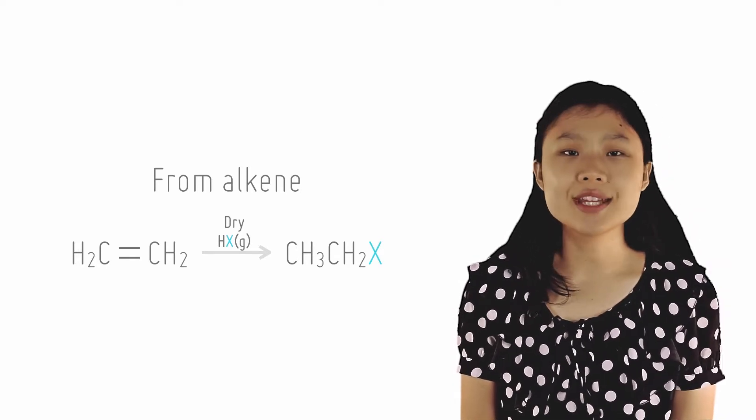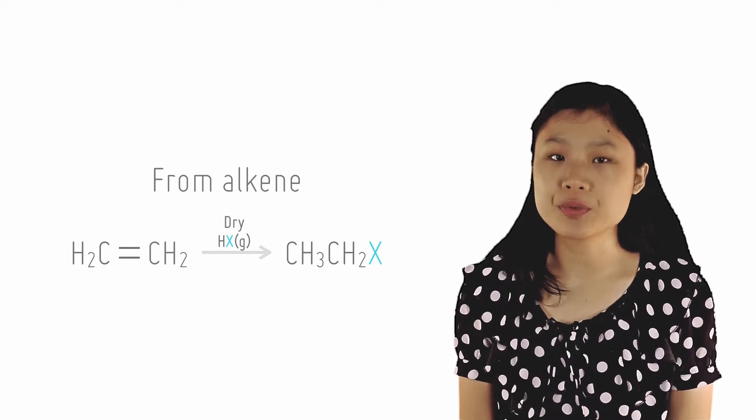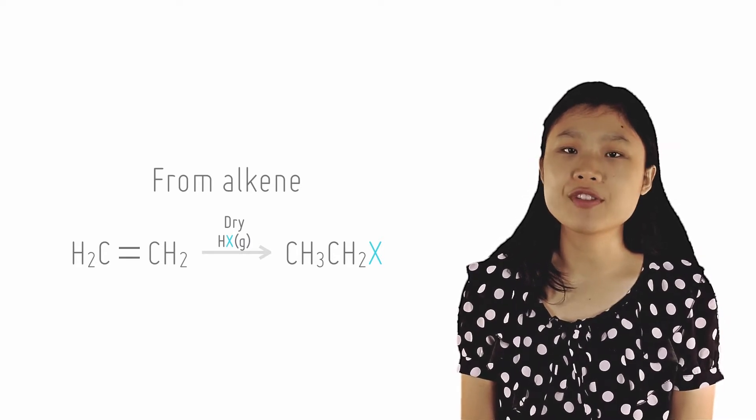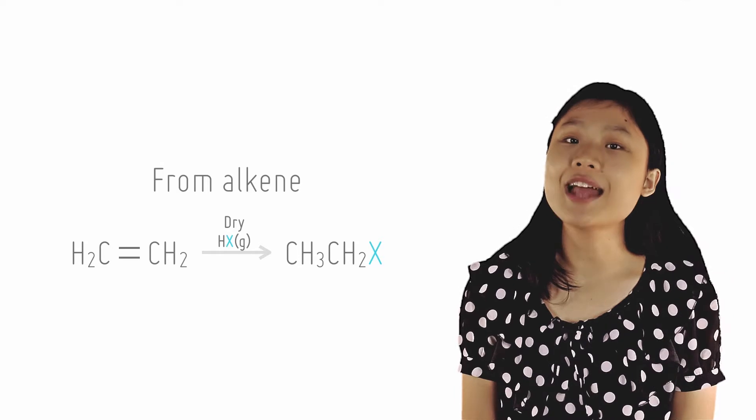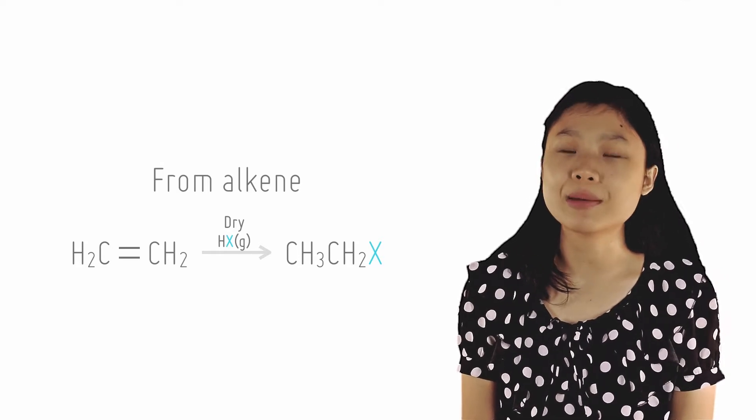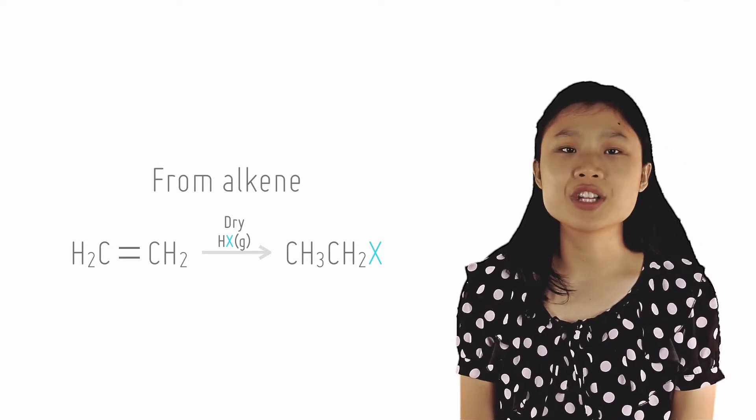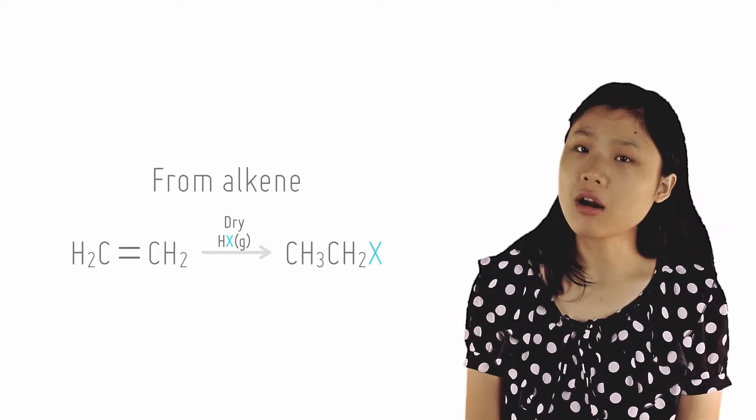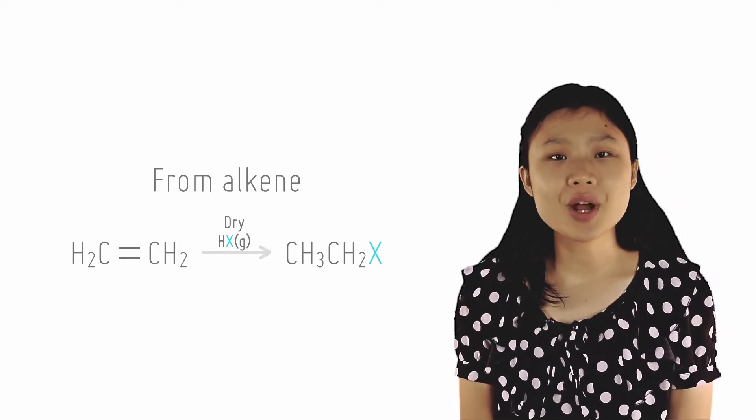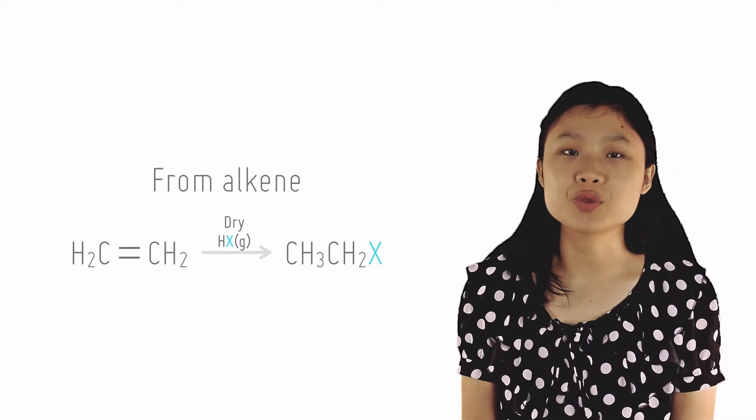Hydrohalogenation can occur when an alkene and a hydrogen halide are combined at room temperature, resulting in electrophilic addition of a hydrogen atom and a halogen atom across the carbon-carbon double bond. The reagent HX can be HCl, HBr or HI and has to be dry and gaseous, and the condition is room temperature.